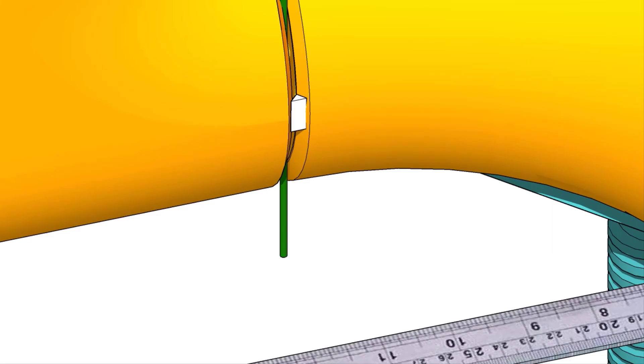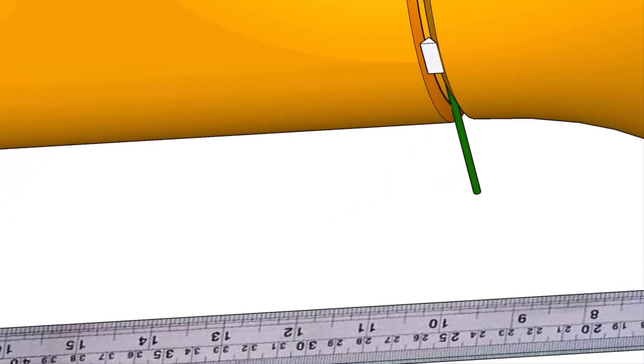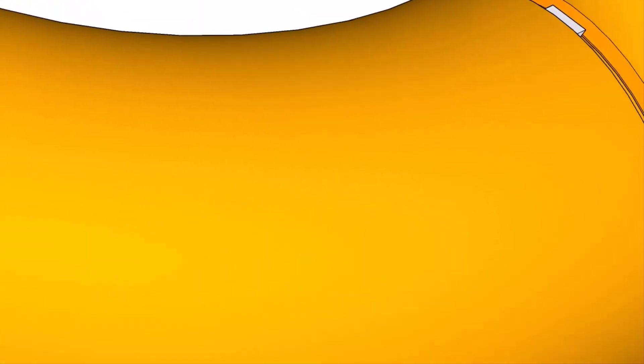Tack weld on both sides of the elbow. Remove the gap rod.